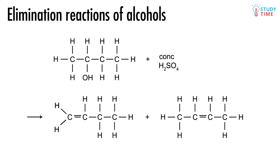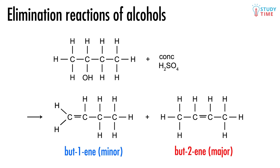In other words, we look at the carbon atoms on either side of the OH carbon, and ask ourselves, which one has fewer hydrogens attached to it? Here, that's going to be the one to the right. Therefore, the double bond is going to form between the OH carbon and that carbon, so that the carbon with the fewest hydrogens ends up with even fewer hydrogens — it gets poorer. So the major product will be but-2-ene, and the minor product will be but-1-ene.